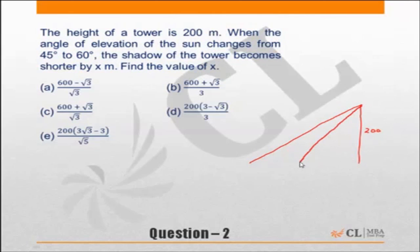45 degrees, one angle will be 60 degrees. Obviously this is going to be 60 degrees, this is 45 degrees. The shadow of the tower becomes shortened by x. So initially the shadow was this much, and then...